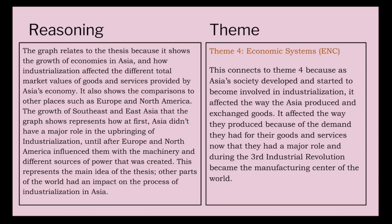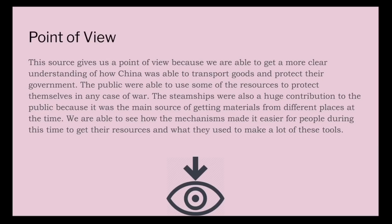For our last piece of historical evidence, we have a picture of many weapons such as cannons and firearms made from steel. Weapons had been used to defeat internal and external adversaries. More pieces of technology made during the Asian industrialization included steamships, which made it easier to travel and transport goods. The source relates to the thesis because it shows many different mechanisms that advanced China's nation. This relates to Theme 6 — Technology and Innovation — because it shows how tools and technology improved transportation and communication in Asia, helping navigation to import raw materials and advancing military technologies.